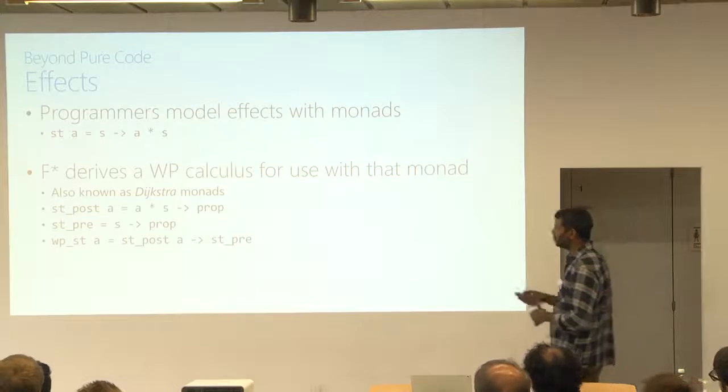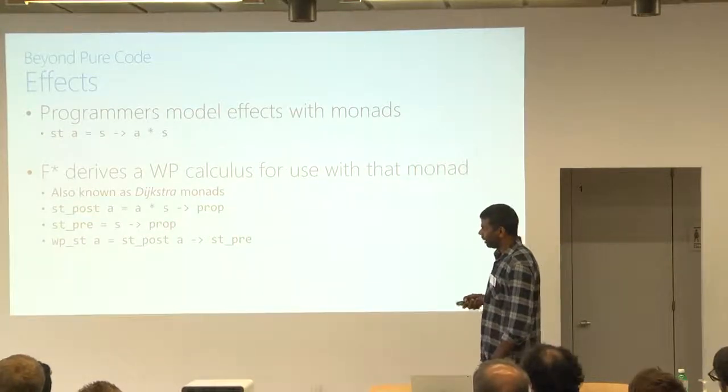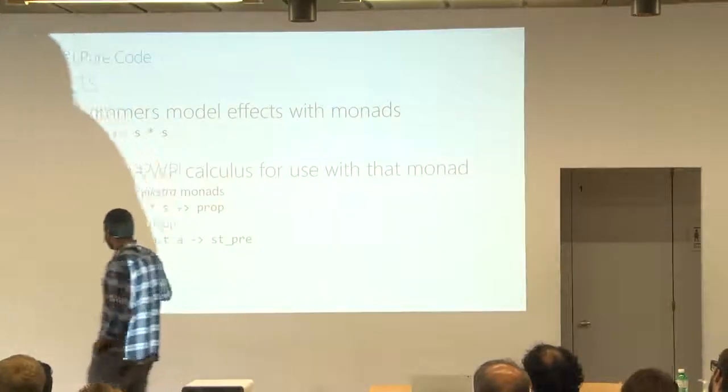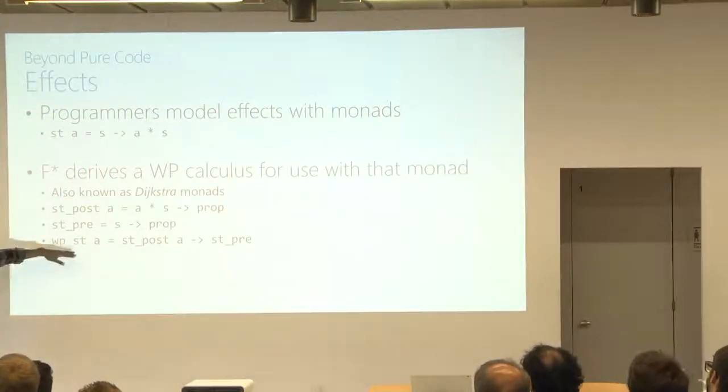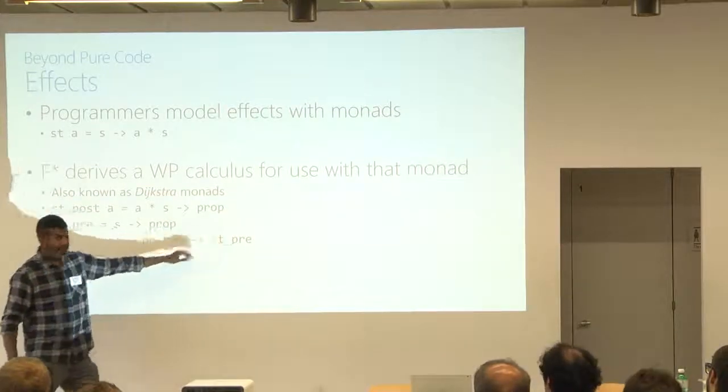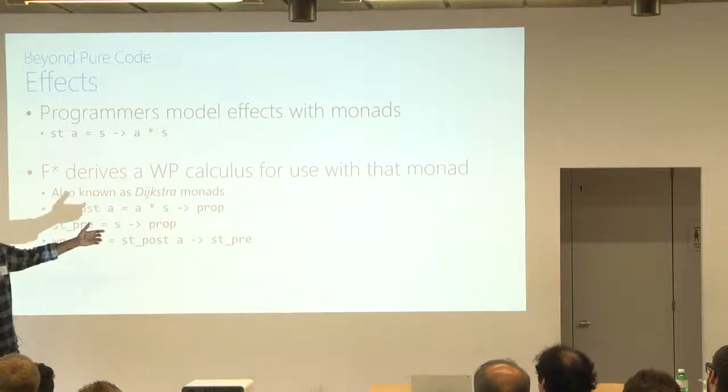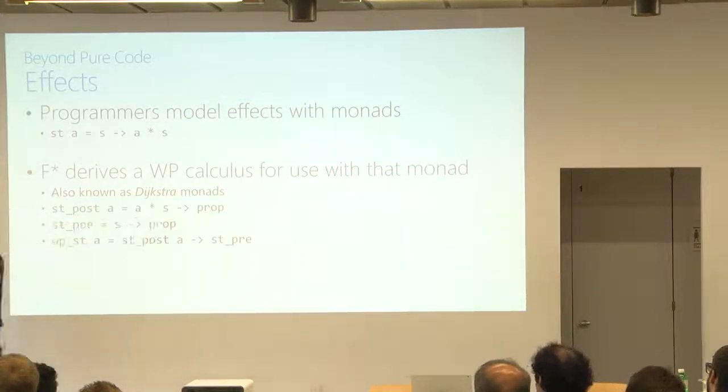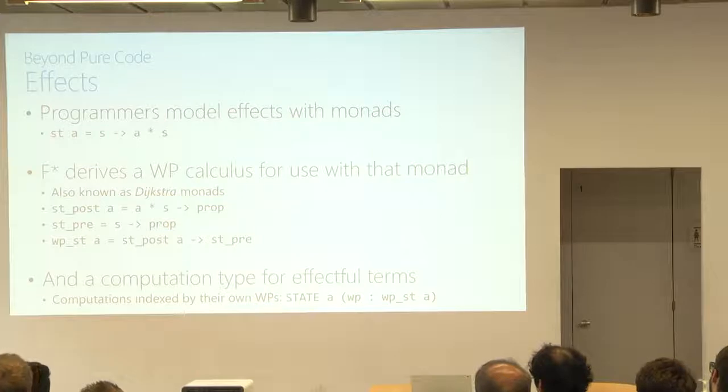So for instance, if you're working with state, F-star will derive a weakest precondition semantics for state monads that you can see as a predicate transformer of this signature, meaning that it takes stateful post conditions on results A to stateful preconditions. Where stateful post conditions are predicates on results and final states, and stateful preconditions are preconditions on the initial state. So if you write a stateful program in F-star, you can give it a spec with respect to its predicate transform semantics and ask F-star to prove something about it.